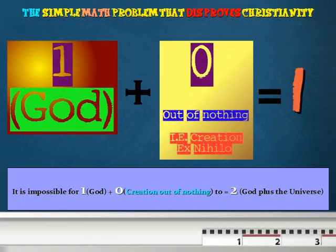Let the number one represent the Christian God, since the number one can represent a single person or thing. Then use the mathematical operation of addition, and the number zero to represent creation out of nothing, since zero can represent a null value or nothing at all.